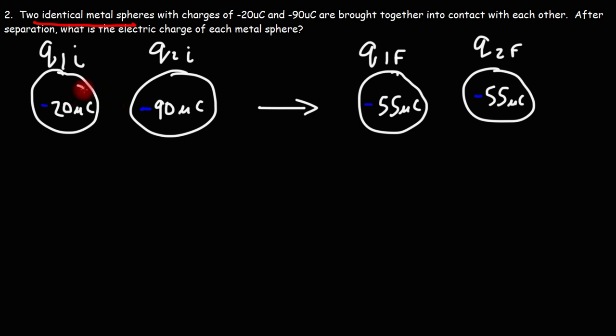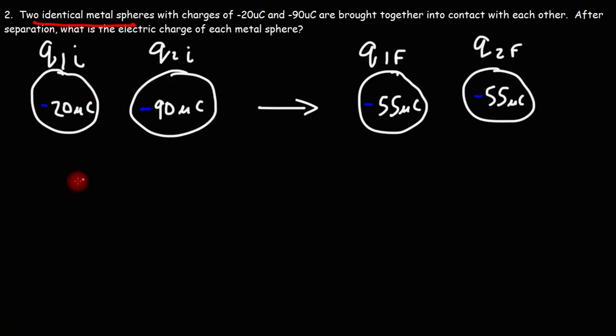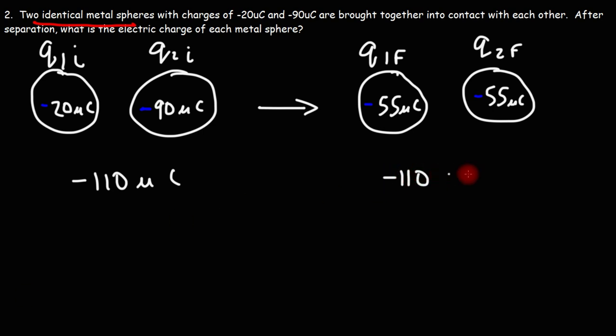As we see in this example, adding these two numbers gives a total electric charge of negative 110, and adding the two final charges also gives negative 110 microcoulombs. So the net electric charge in this problem is conserved. After separation, each identical metal sphere will have the same charge — that's the important point of this problem.